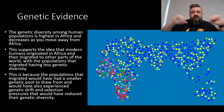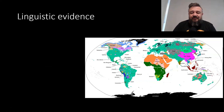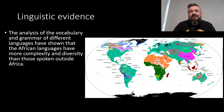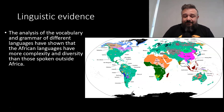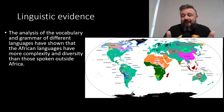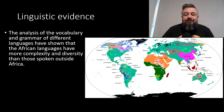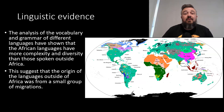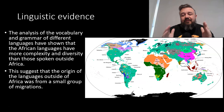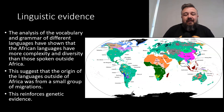Then we have linguistic evidence, which is really fun. This is analysis of vocabulary and grammar of different languages. Again, there is more complexity and diversity within Africa — within that single continent — than there is outside of Africa, which is remarkable. What that means is it reinforces the idea that a single group with a single language, or a minimal number of languages, is what left Africa and then spread throughout the world. This really backs up the genetic evidence — you can see how these two are linked together.